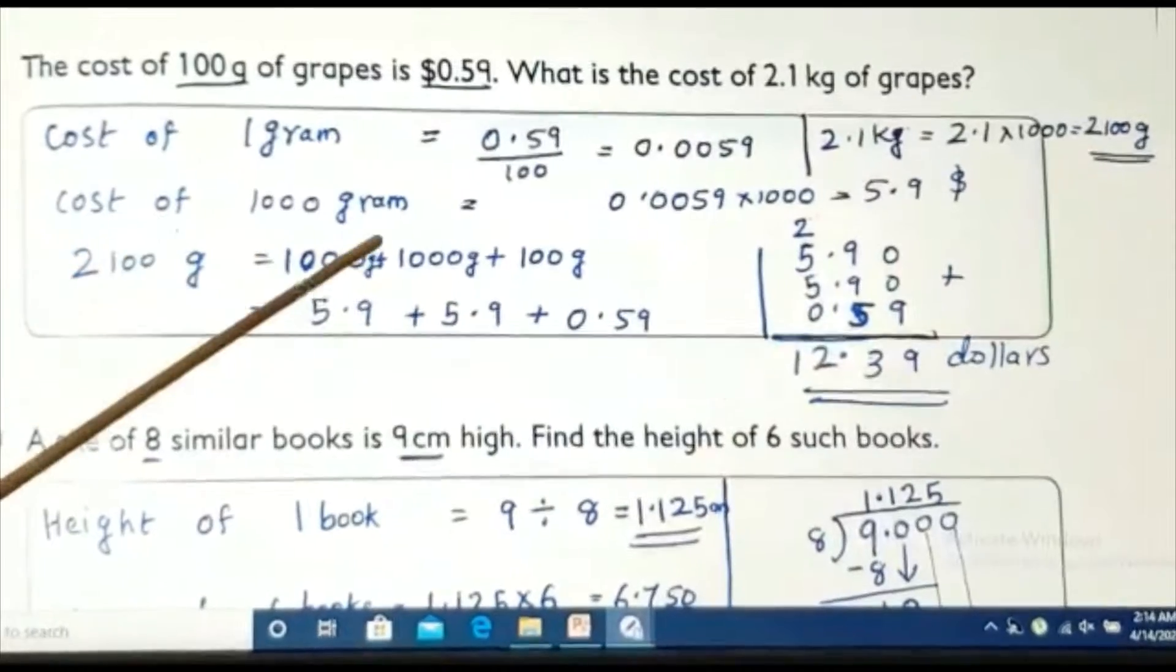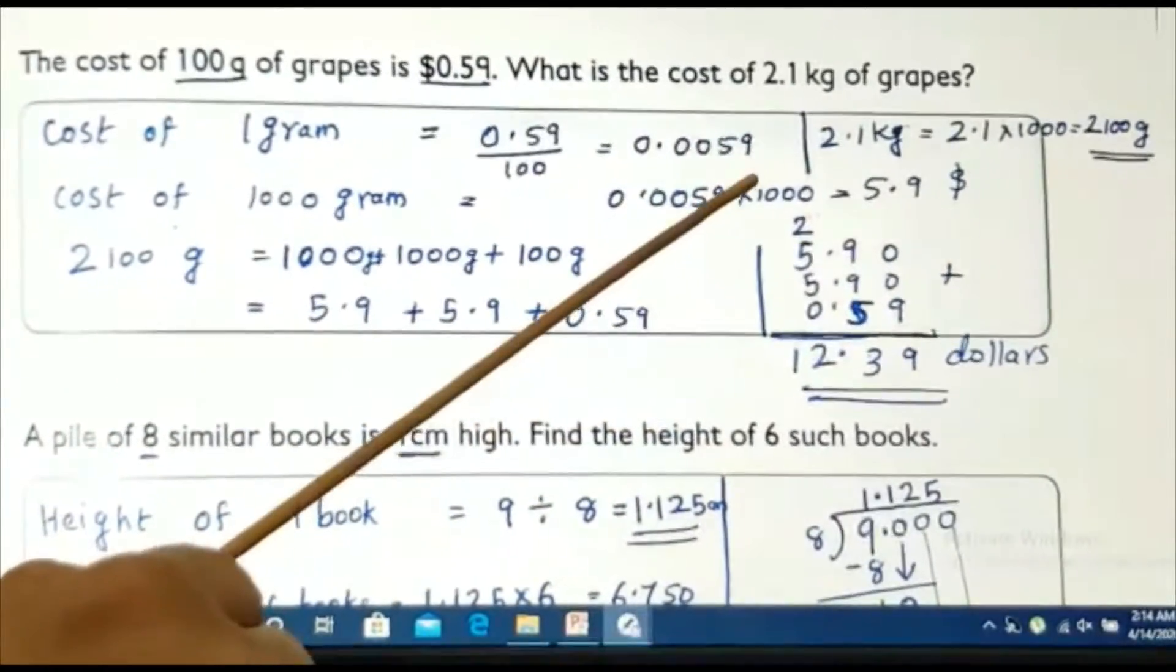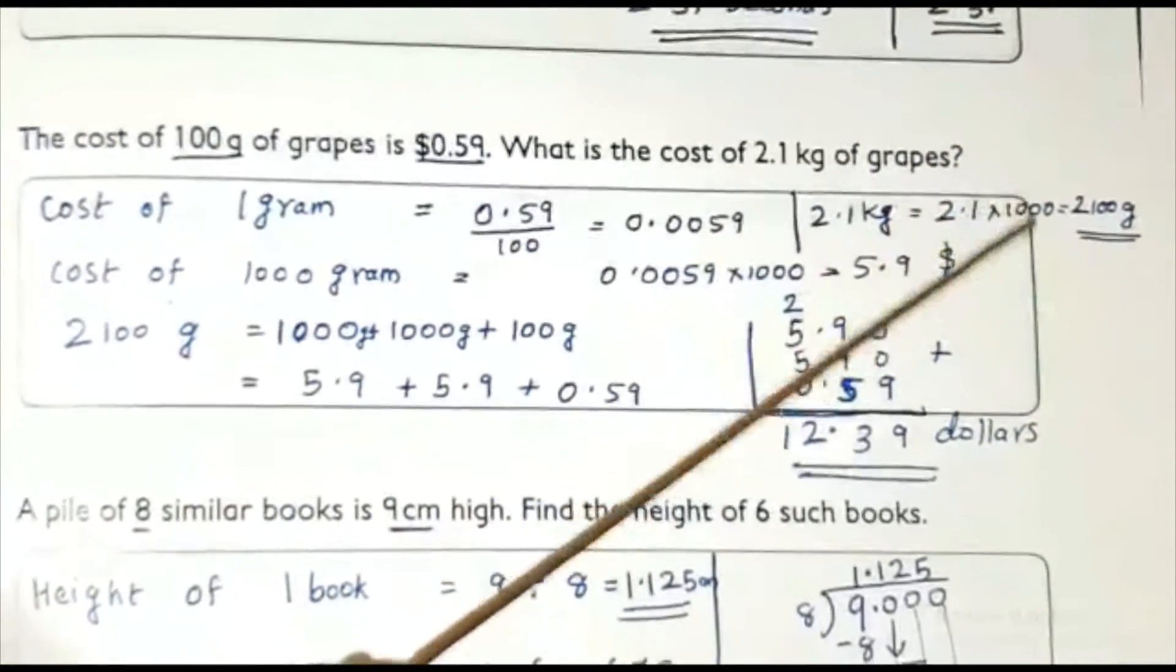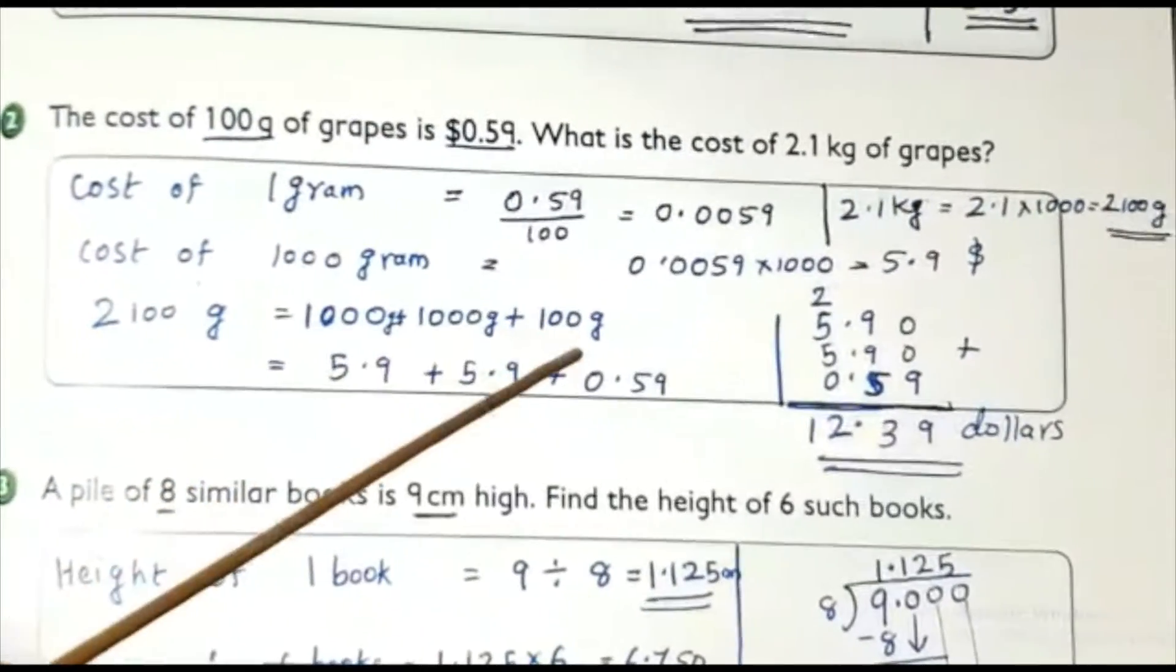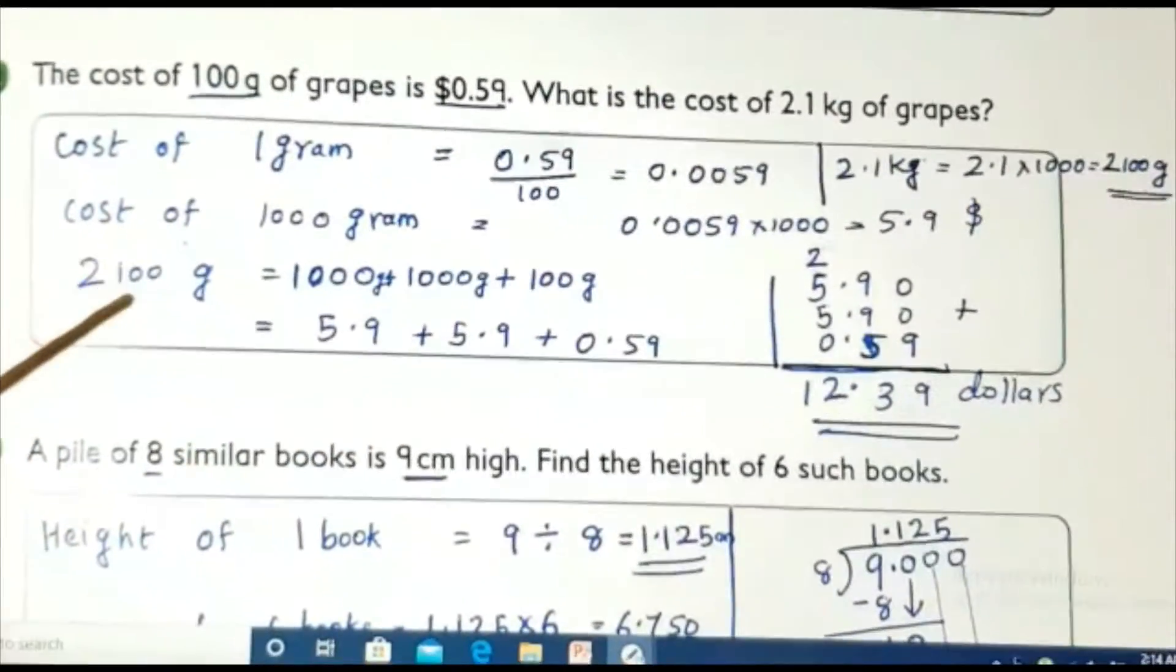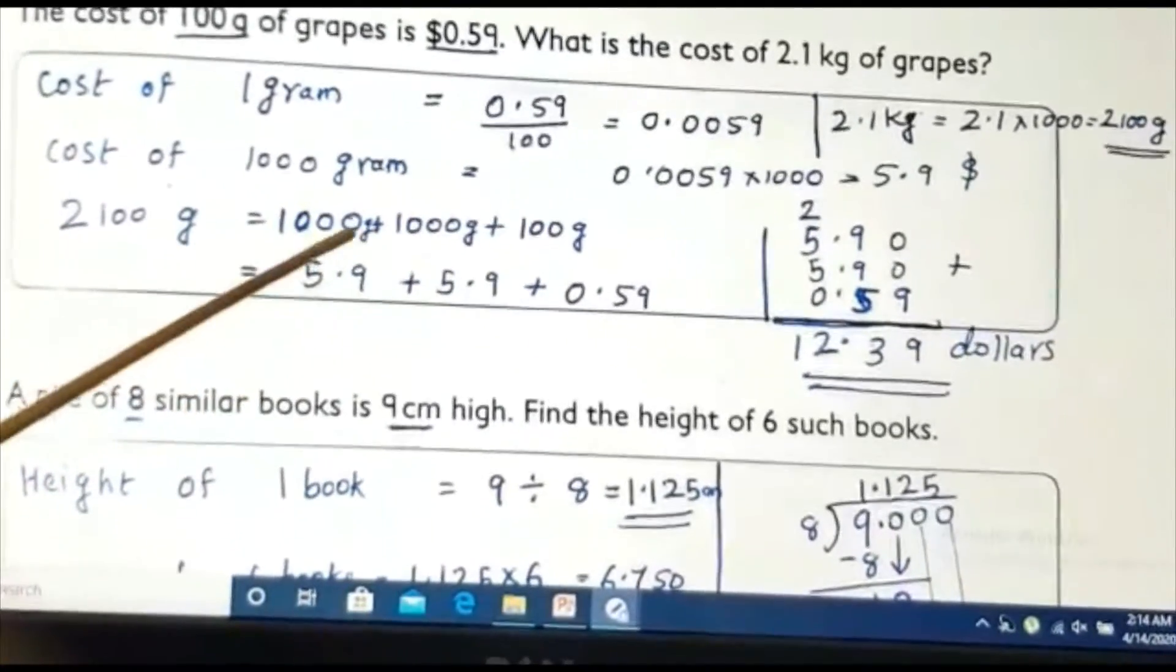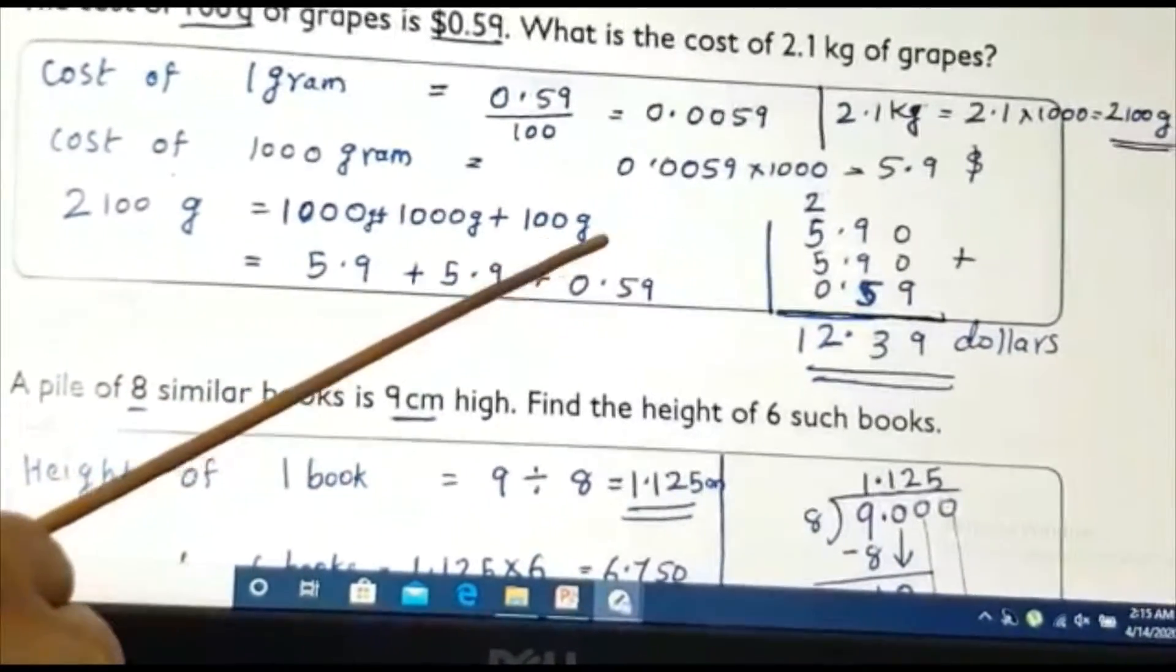I am just doing like cost of 1,000 gram is I got 5.9 by multiplying by 1,000. How many 1,000 grams are there in 2,100? 2,000 and 100. I just did this for simplicity. You can do it directly. No problem. 2,100 gram is 1,000 gram plus 1,000 gram plus 100. 1,000 plus 1,000 is 2,000. 2,000 plus 100 is 2,100 grams.